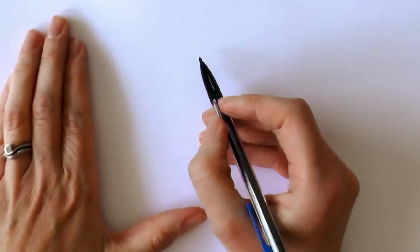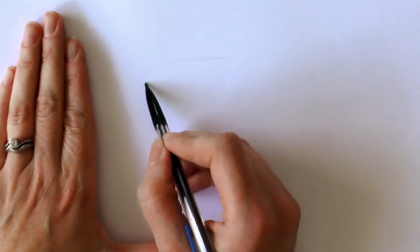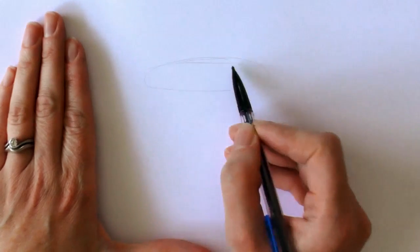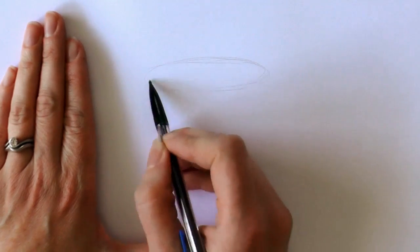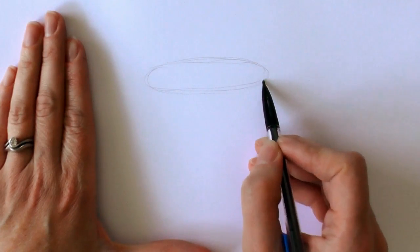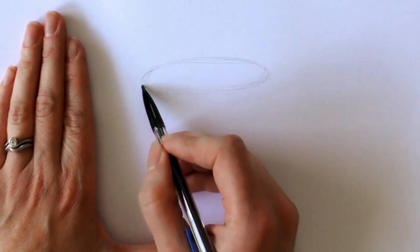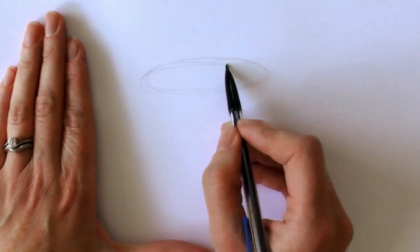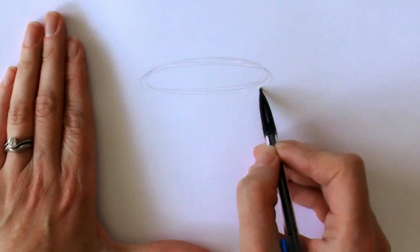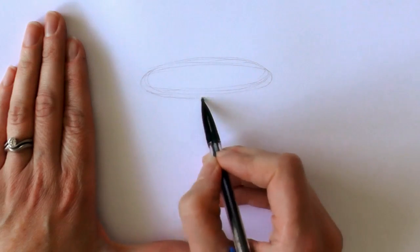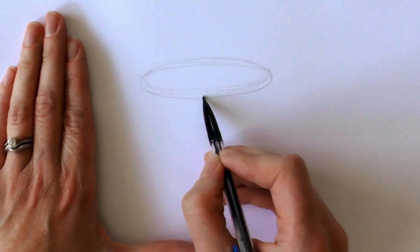So first up what we draw is a thin oval, kind of a squashed oval in a way. Then we draw another thin oval, slightly wider than the first one, just below it as well.